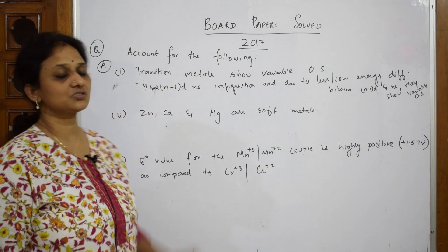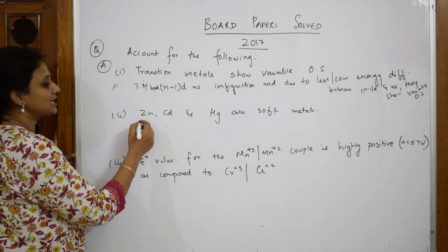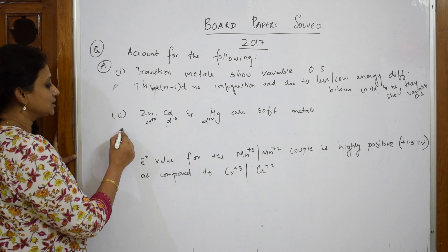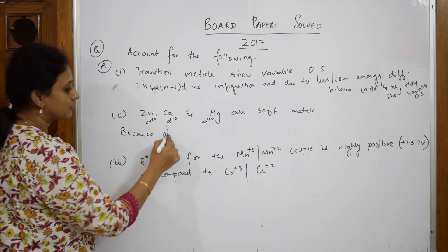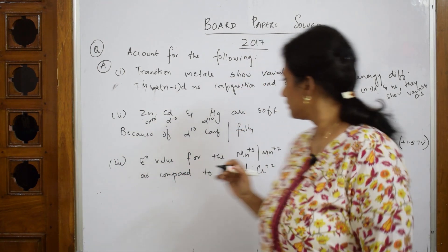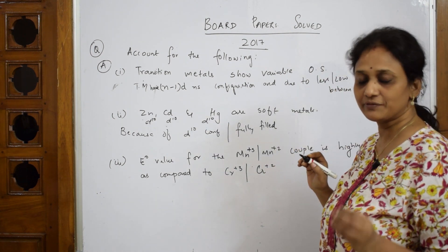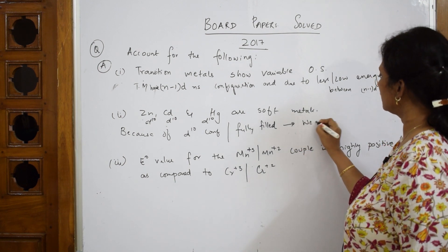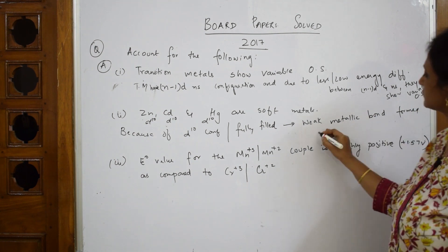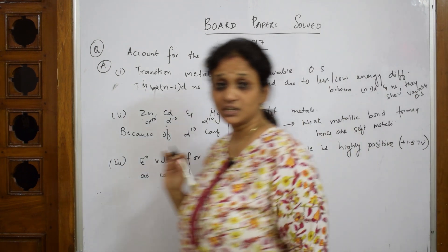Next: why are zinc, cadmium, and mercury soft metals? You are always going to relate metallic property with configuration. Zinc has a 3d10 configuration, cadmium also has a d10 configuration, and mercury also has a d10 configuration. Because of this fully filled d10 configuration, the orbitals do not effectively participate in bond formation, and even when they do, only weak metallic bonds form — hence they are soft metals.